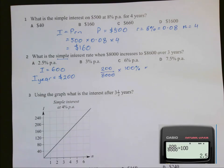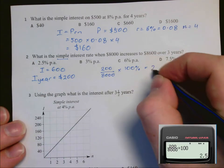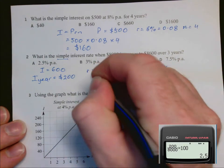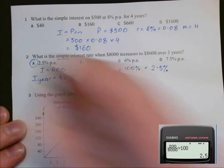If we press the SD button, we get 2.5%. So that is our rate, which is answer A.